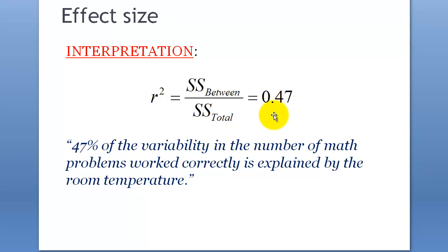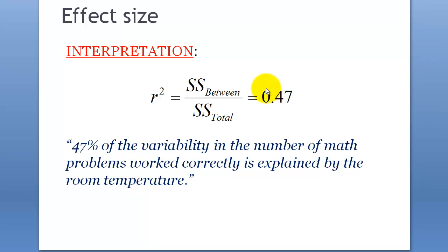The result is 0.47. What it means is that 47% of the variability in the number of math problems worked correctly is explained by the room temperature. So 47% of the variability would be attributed to the room temperature — that's what the effect size means.